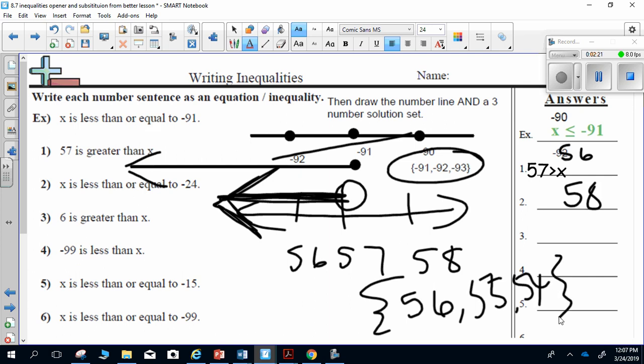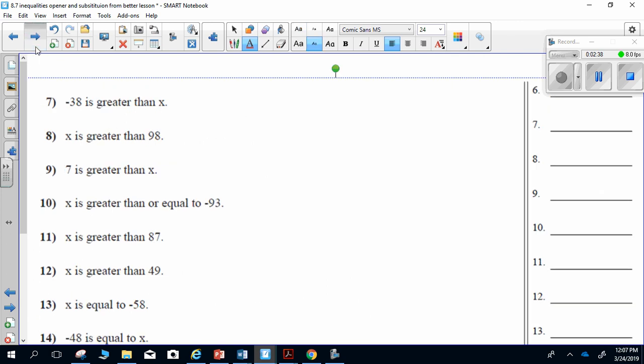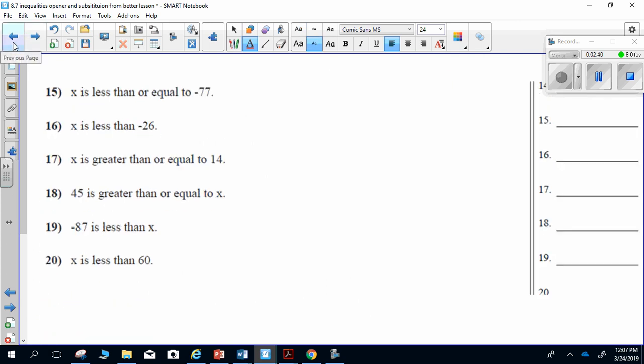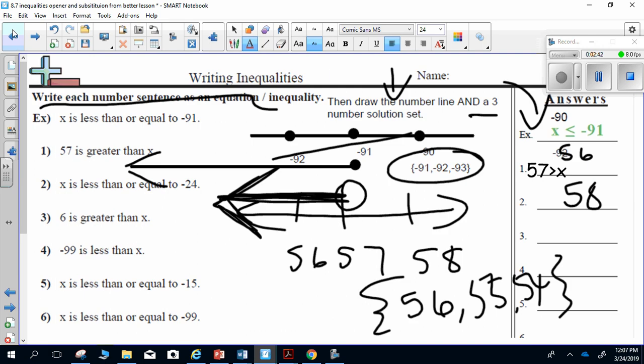So on this worksheet, you're doing three things. Write the number sentence. That goes over here. Draw a baby number line. That goes here. Graph the baby number line, and then write the three-number solution set. You need to do this entire worksheet today where you've written these all out, graph them, and written a three-number solution set for all of them.